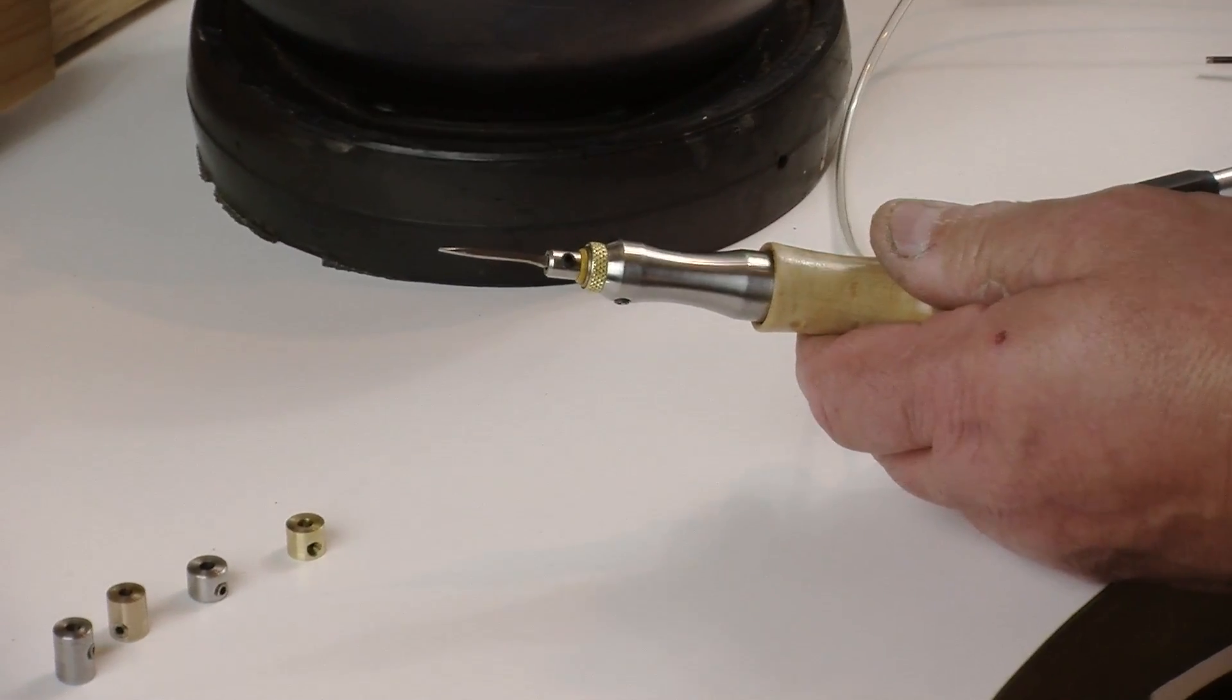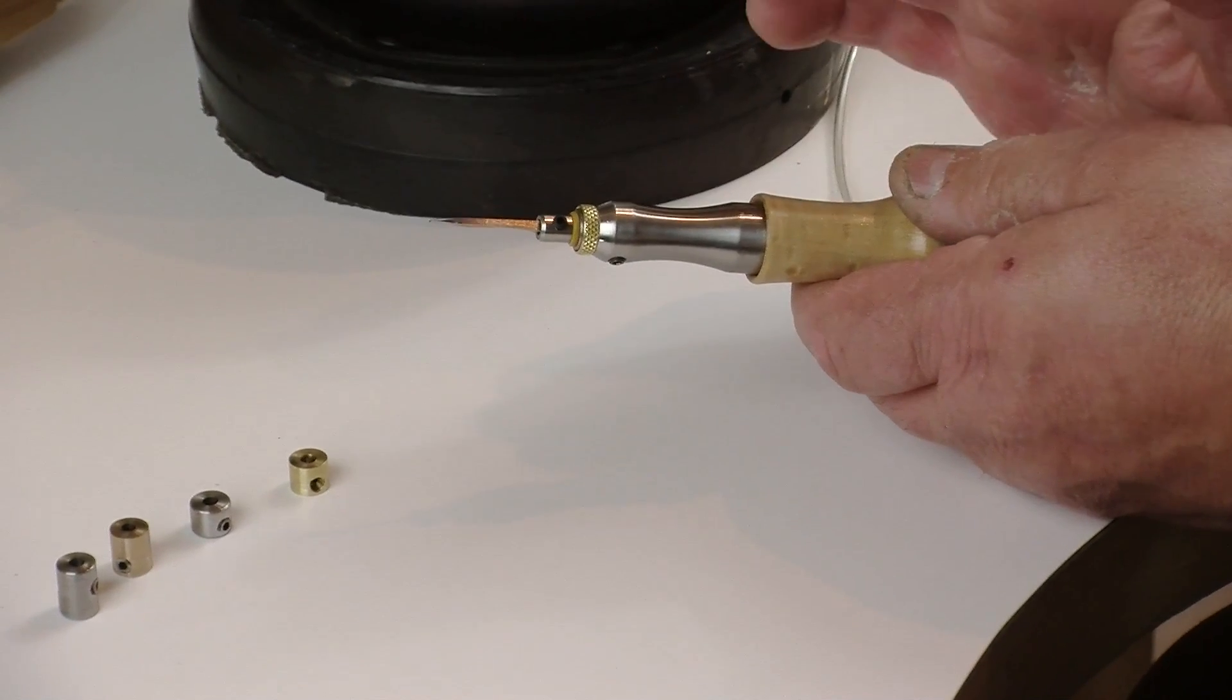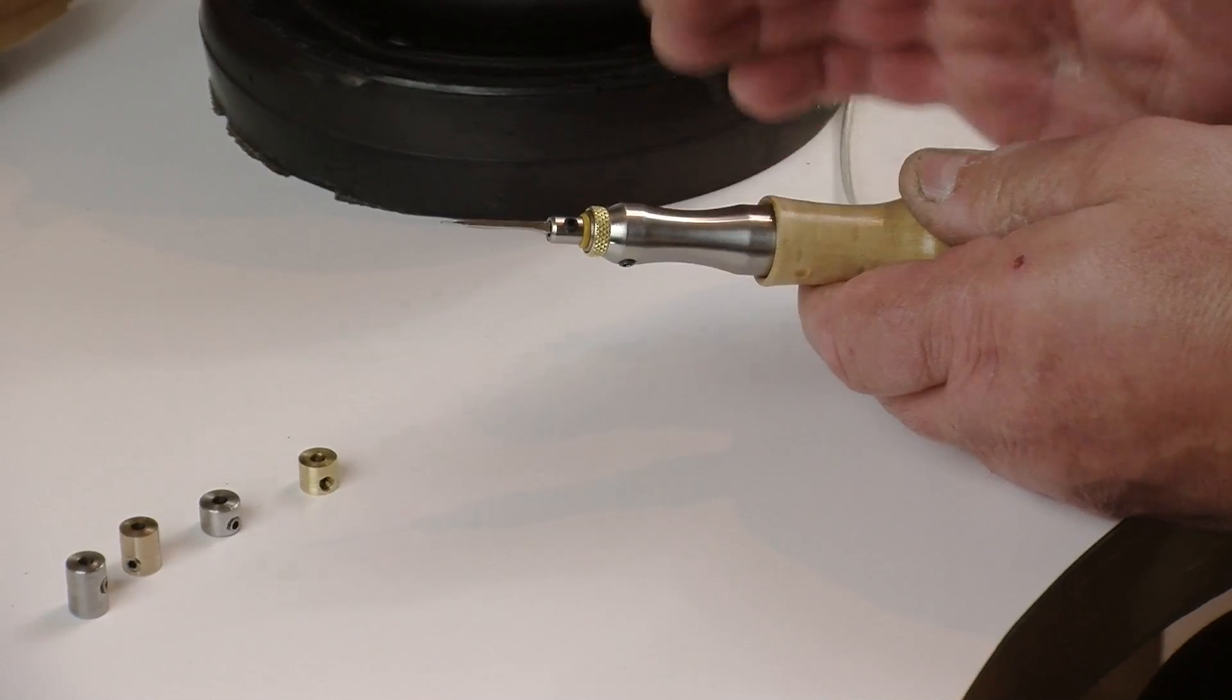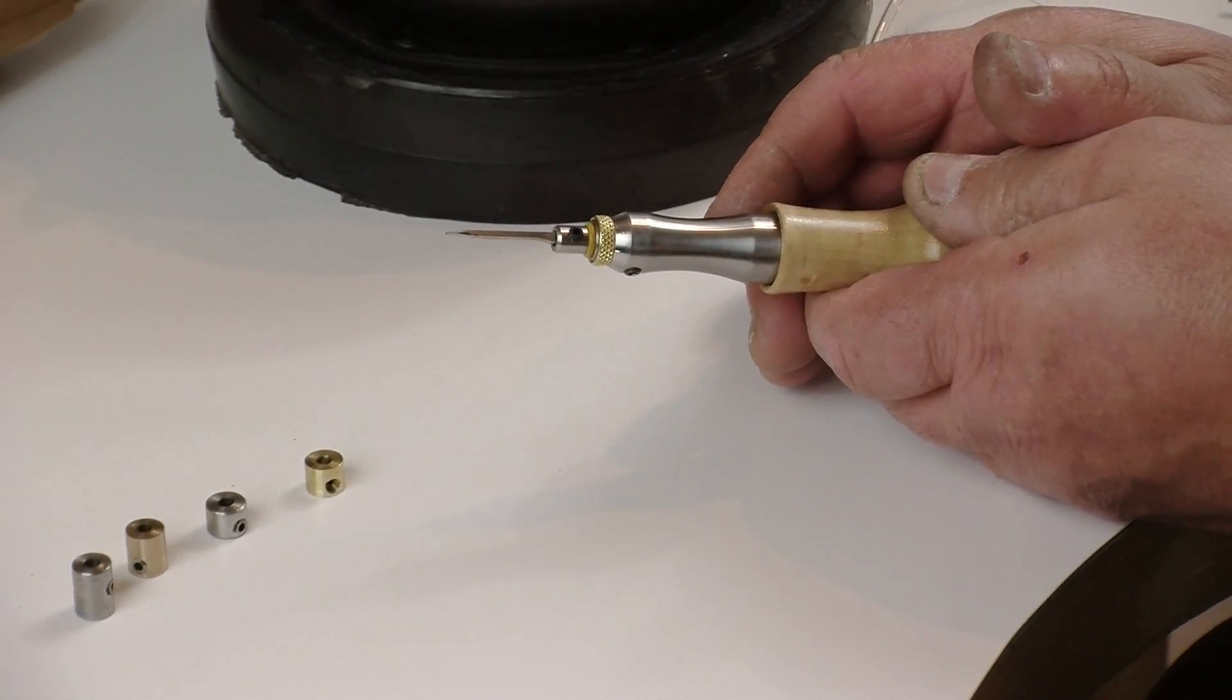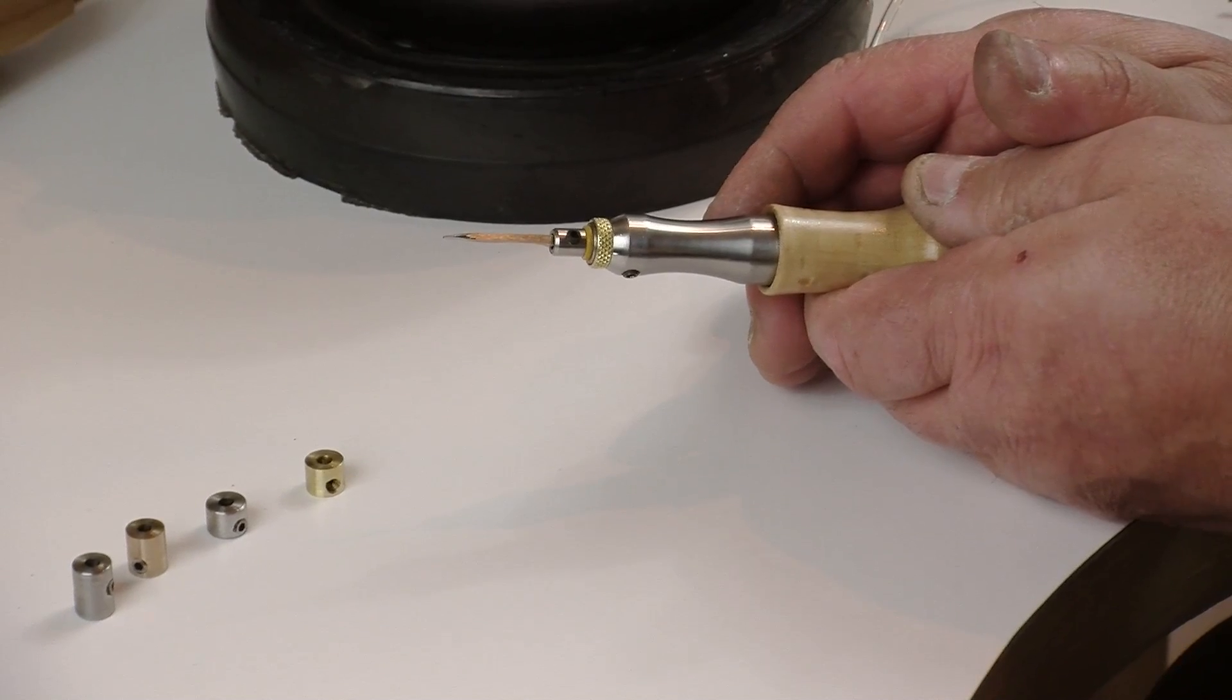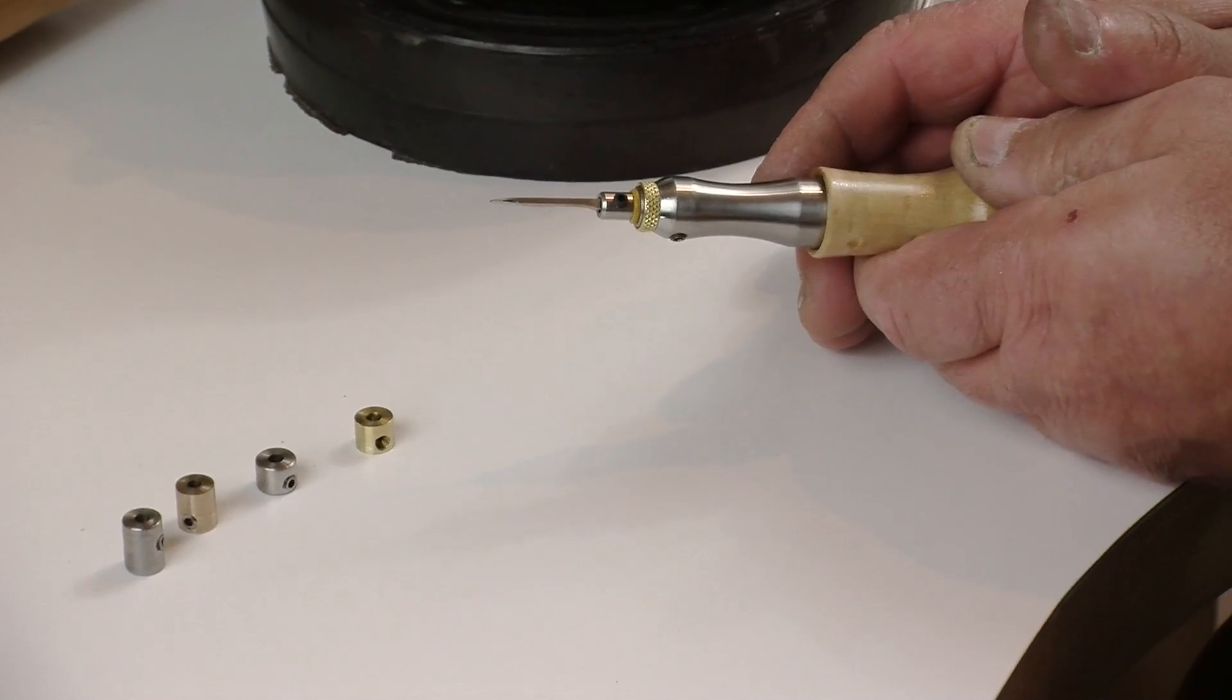When you want to adjust the system, you have three different ways that it can be done. The first is to set your pressure higher or lower. The ENDSET works in a pressure range from somewhere between 40 up to 90 and even 100 psi.